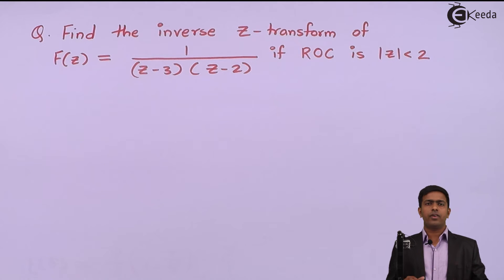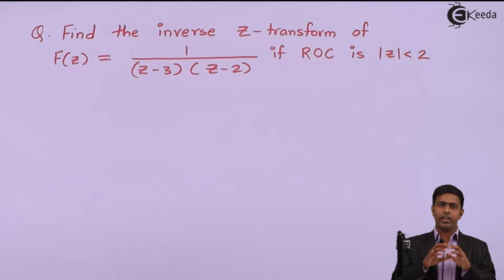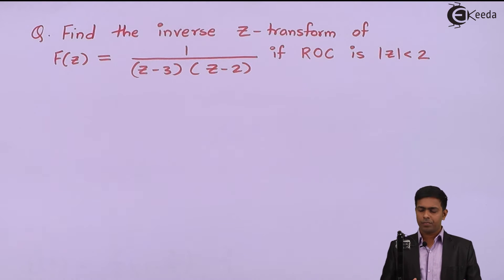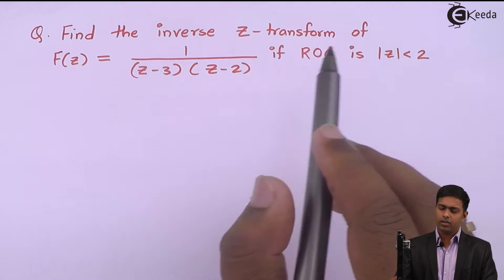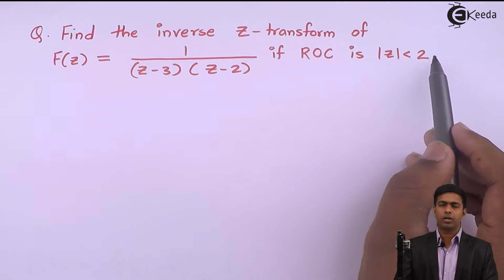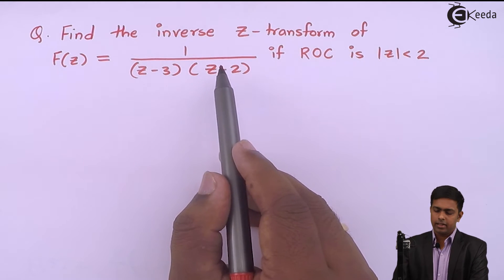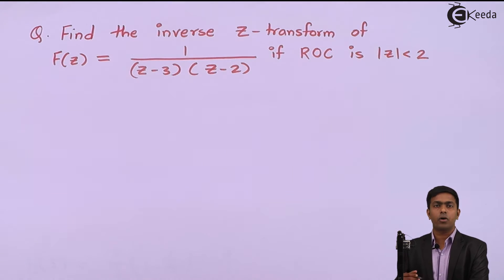What is the meaning of region of convergence? The region of convergence is the set of values of z for which the z-transform exists or is convergent. If the value of z is less than 2 then we never get zero, but as soon as z becomes 2 we get 2 minus 2 = 0, making the answer infinity — and at that point we say the z-transform diverges.